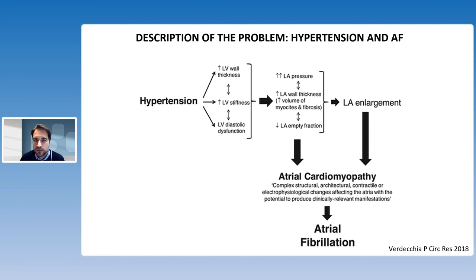We have seen in the previous presentations that hypertension can be an important risk factor for atrial fibrillation. In patients with hypertension, we often see the development of cardiomyopathy through the initial diastolic dysfunction of the left ventriculum and the increased wall thickness of the ventriculum. These initial changes can lead to changes in the atrium, with increased pressure and increased thickness, causing enlargement of the atrium — a well-known hallmark of atrial cardiomyopathy associated with atrial fibrillation.